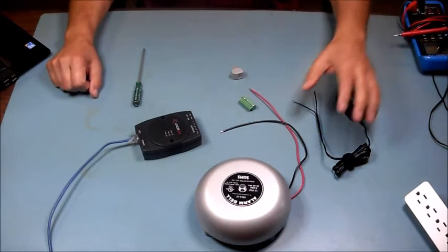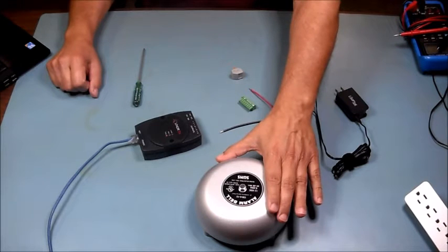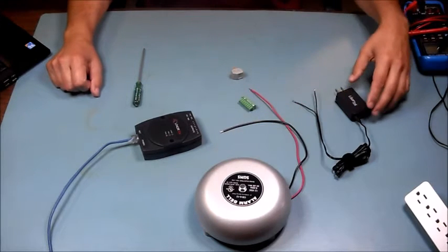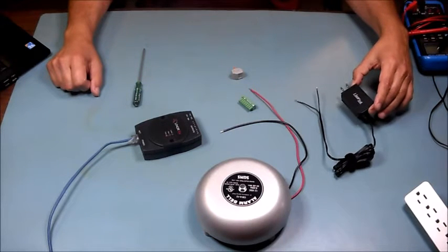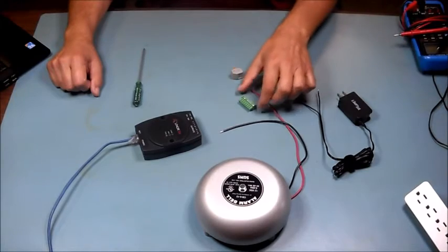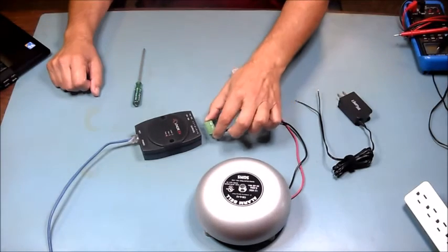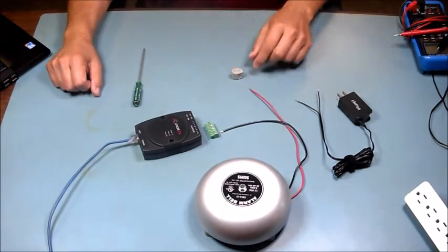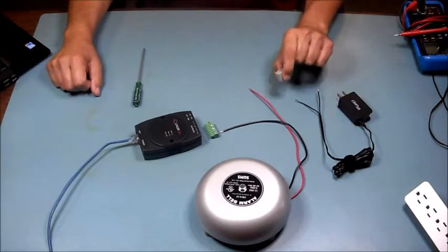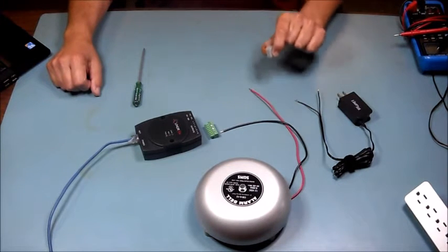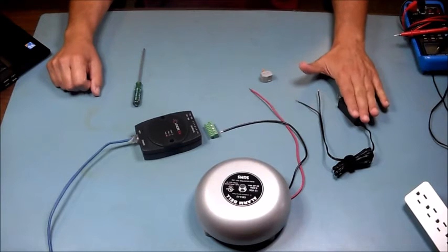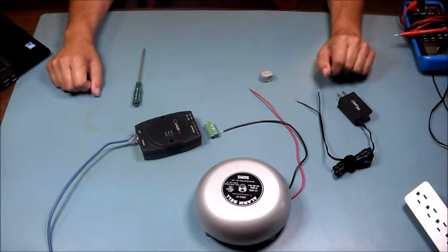We also have our 12-volt DC bell, our power supply, our connector for the Net Bell 4, and a connector for the power side of the bell coming off of our power supply.